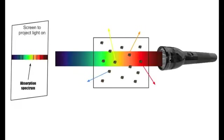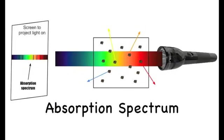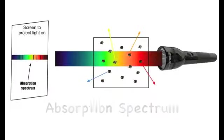This is like a fingerprint for an atom, and it's called that atom's absorption spectrum. If you were to ever see this progression of dark lines in these exact positions, you would know that the gas you were looking at was composed, at least partly, of our hypothetical atom.